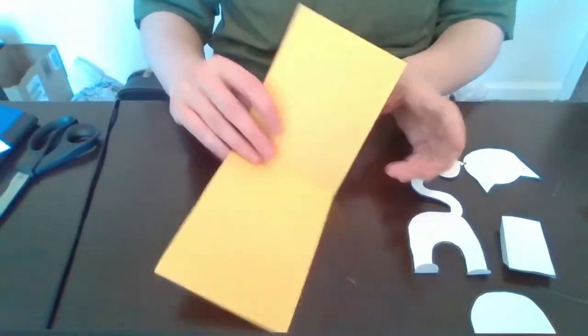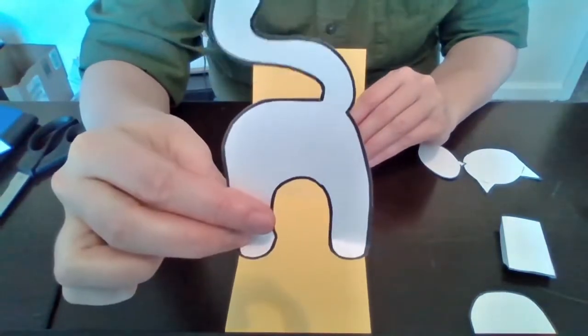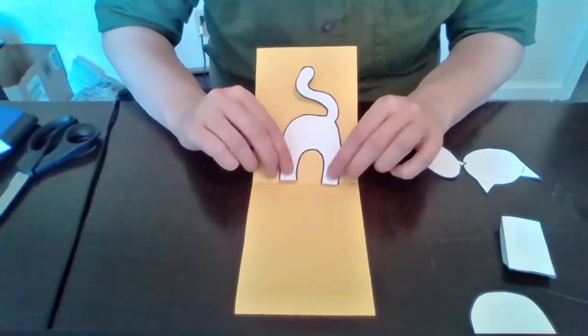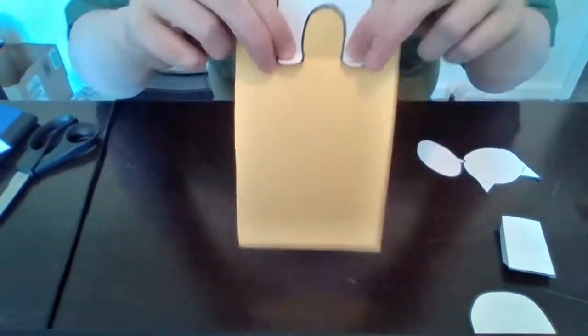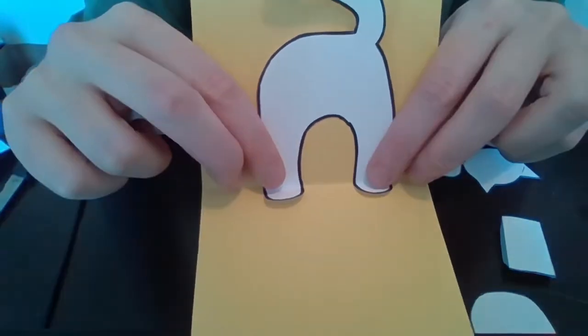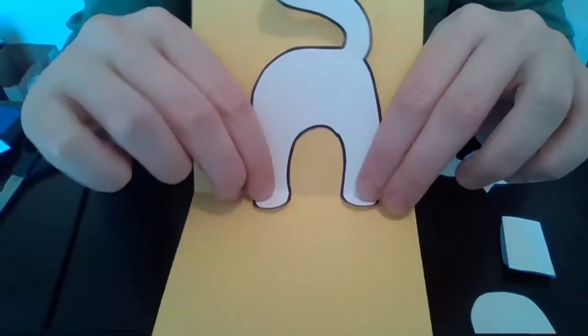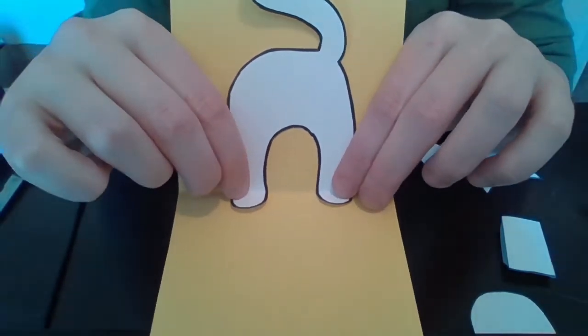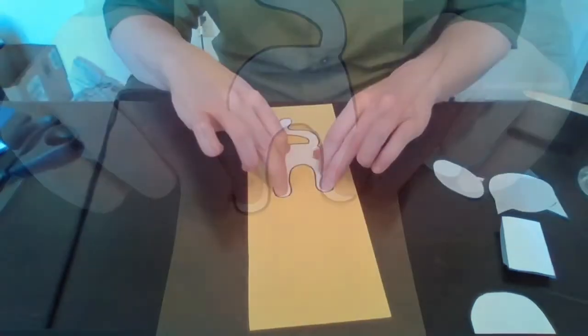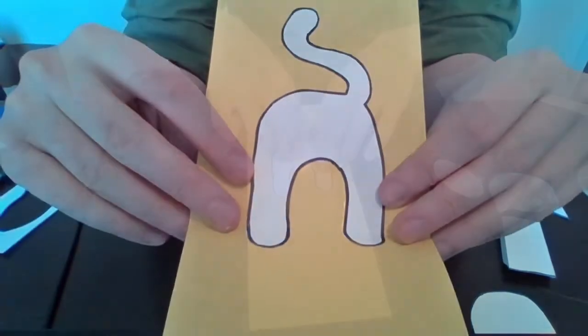Alright, we're going to open our card and we're going to take the back body piece, it's the one with the tail, where we folded the feet. That's where they're going to line up with the crease of the card. So take your glue and we're going to glue this back body piece to the card right there where the feet line up with the crease of the card. And there we are.